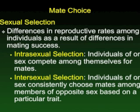Mate choice or sexual selection is the result of competition between individuals where one ends up with greater mating success than another. This is broken into two categories. Intrasexual selection is where males compete against each other, and the male that wins gets to mate with the females. You can see this with red-winged blackbirds that defend territory and fight off other males.